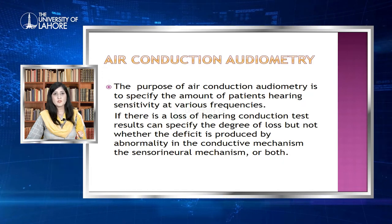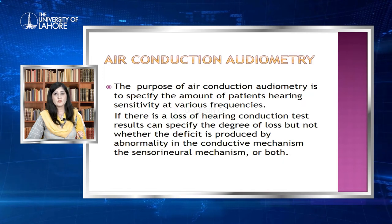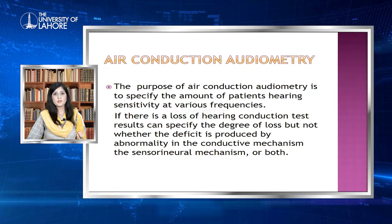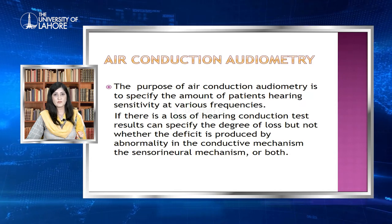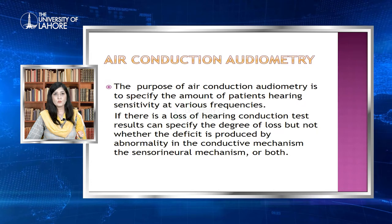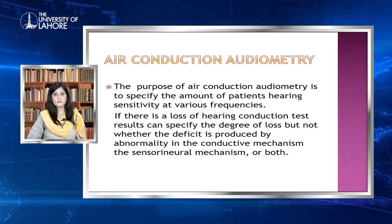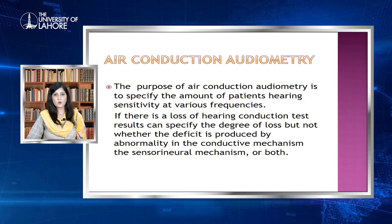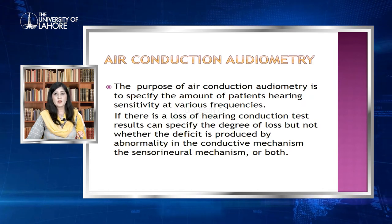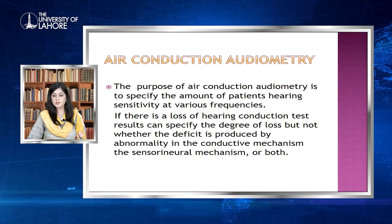In pure tone audiometry, the procedure of air conduction audiometry involves measuring the different thresholds of hearing at different intensities and frequencies. Air conduction audiometry tells us about the degree of hearing loss, but it does not tell us about the type of hearing loss. The type of hearing loss will be identified by doing bone conduction audiometry, which we will discuss after air conduction audiometry.